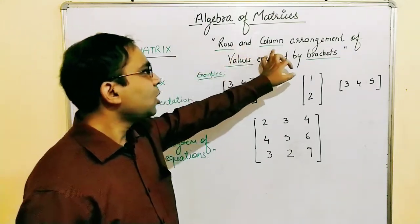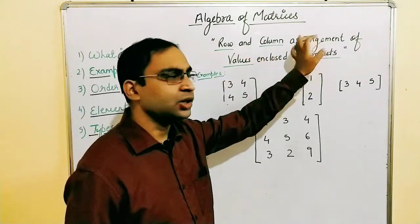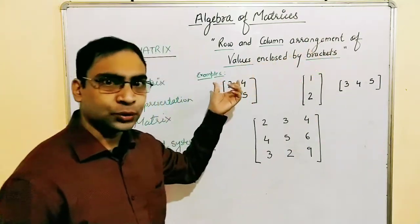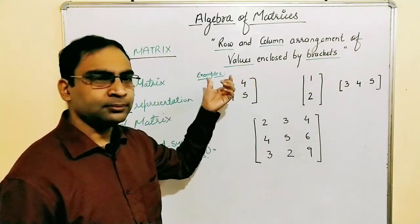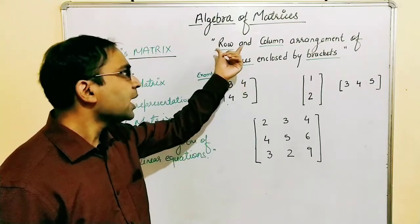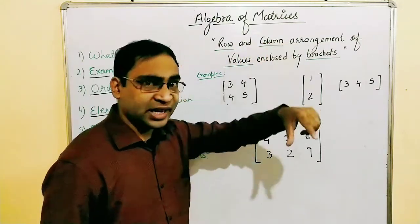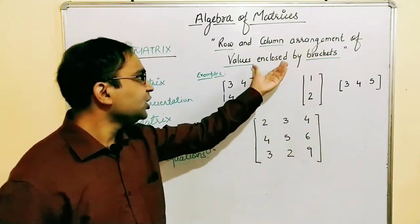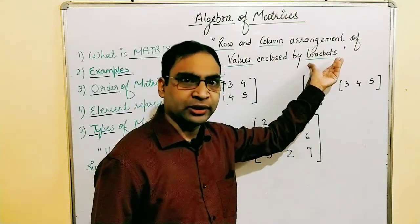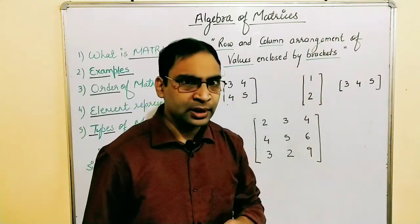— it's a row and column arrangement of values. So when we arrange some values in row and column form and then enclose that arrangement within brackets, that becomes a matrix.